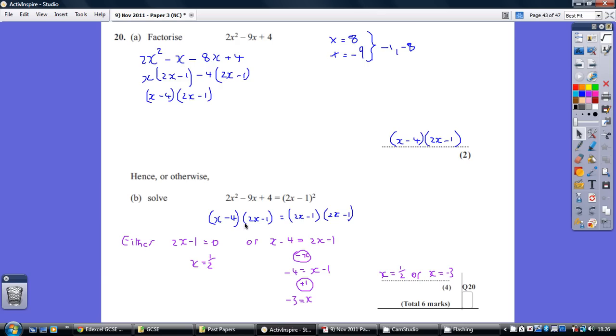Now, effectively then, we consider those cancelled out, and then so our second solution comes from what remains, which is x minus 4 equaling 2x minus 1. So that's where we get our two solutions.